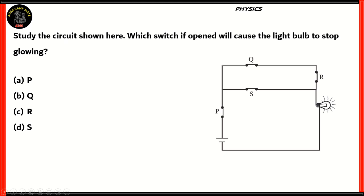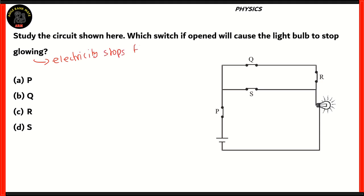This is the next question on physics. Study the circuit shown here. Which switch, if opened, will cause the light bulb to stop glowing? Options: A — P, B — Q, C — R, D — S. In this circuit there is a battery, four switches, and a bulb. Right now the bulb is glowing since all switches are closed. We have to find which switch, if opened, would cause the light bulb to stop glowing — which basically means electricity stops flowing.